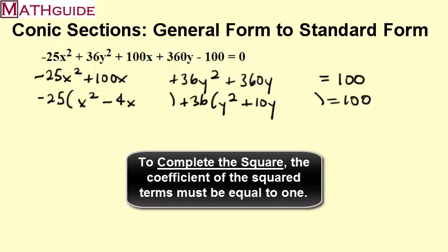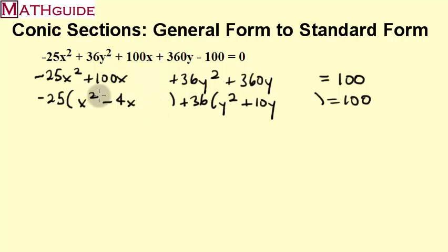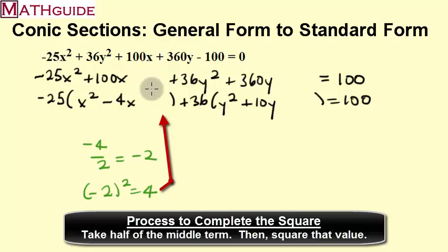Now comes the step where we calculate what this value has to be to create a perfect square trinomial. In order to do that, I'm going to do those steps on the side. For instance, like the negative 4, you take that term, the term in front of your x, you divide it by 2. Once you divide it by 2, then you take that value and you square it. So now I know this value has to be 4. So I'm going to put a plus 4 there, and I'm going to underline it.